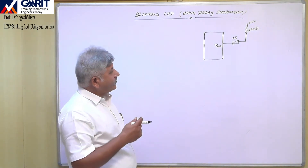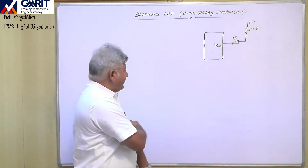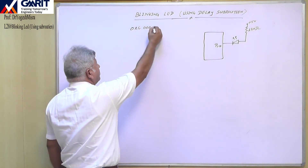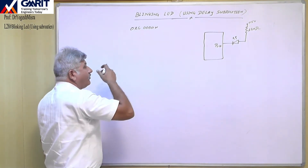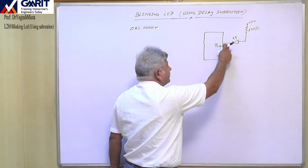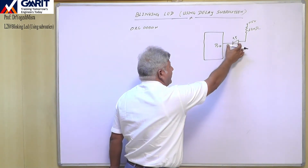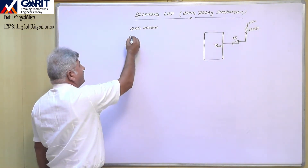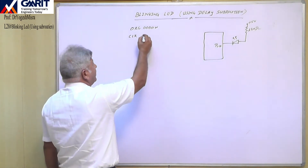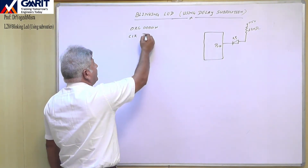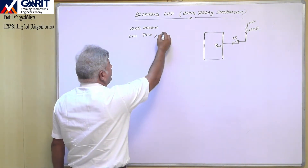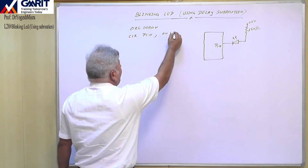We have to first turn this LED on. We will write the program starting with ORG 0000H. To turn on this LED, we first send a 0 value so that this LED becomes forward biased and turns on. For this we write CLR P1.0 — this instruction will turn the LED on.